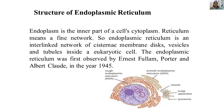The endoplasmic reticulum is a part of the cytoplasm; 'reticulum' means a fine network. It is an interlinked network of cisternae, membranes, discs, vesicles, and tubular structures inside the eukaryotic cell. The endoplasmic reticulum was first discovered by Ernest Fulton, Porter, and Albert Claude in the year 1945.